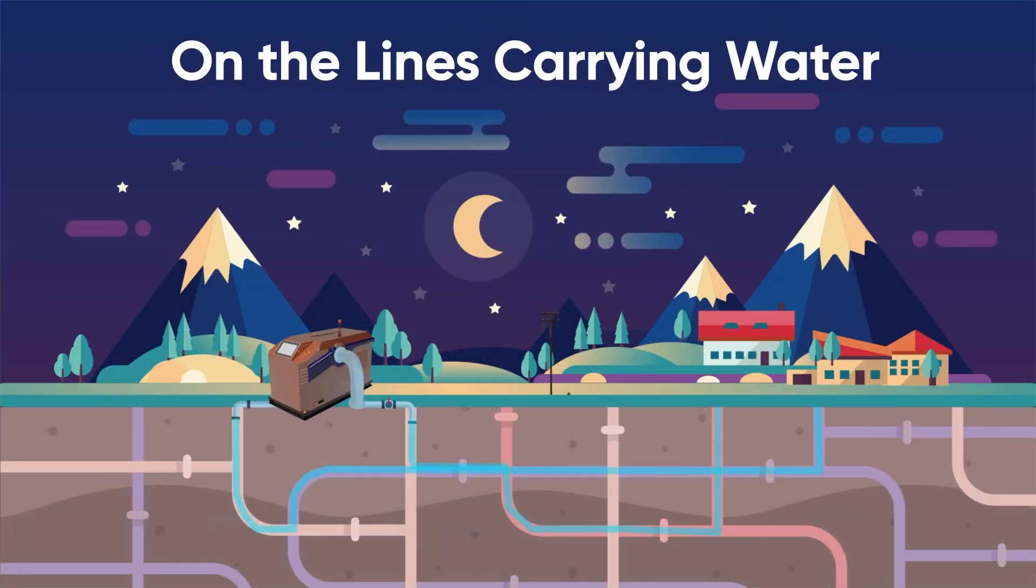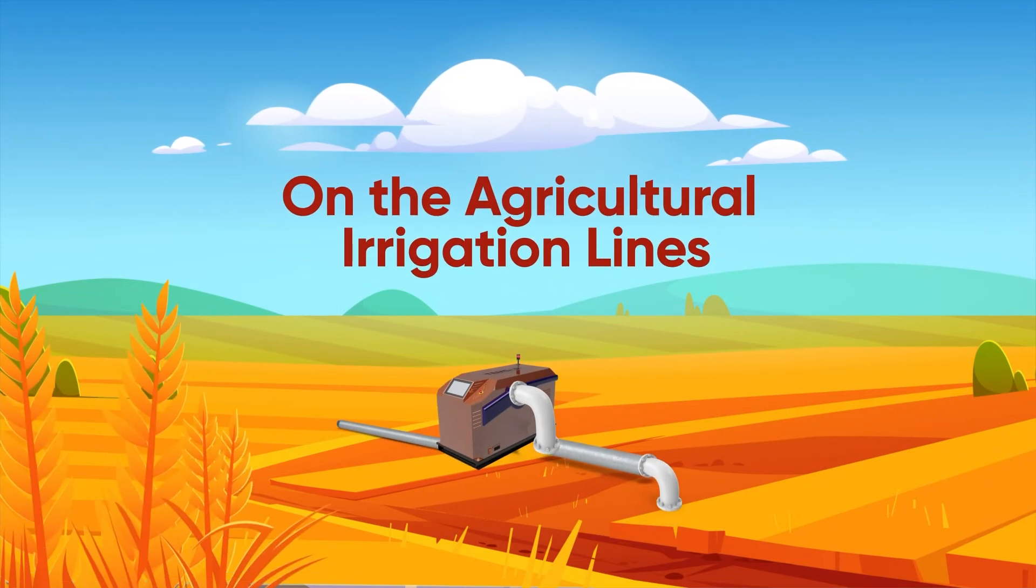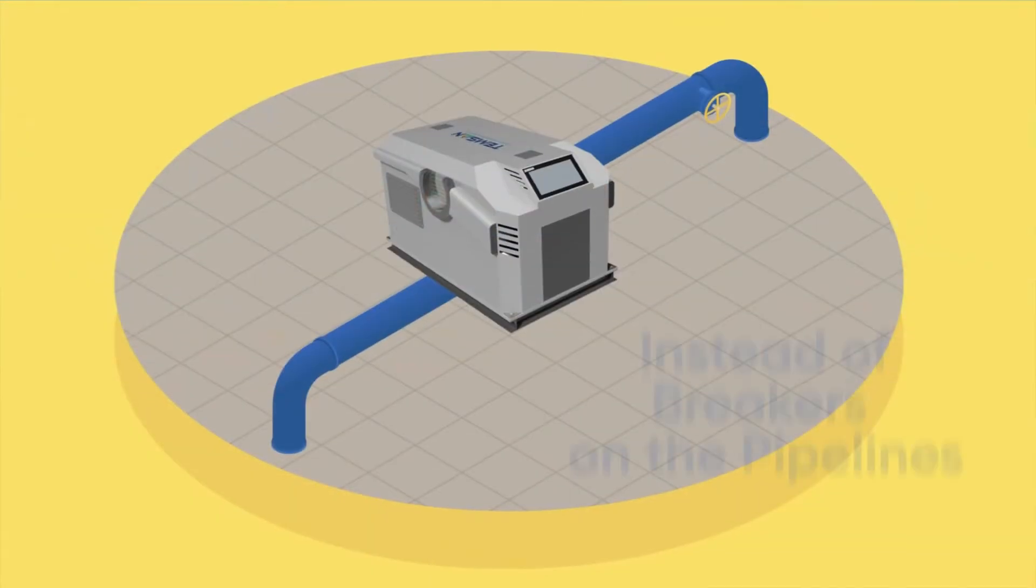For instance, on the lines carrying water to residential areas, on agricultural irrigation lines, instead of breakers on the pipelines.